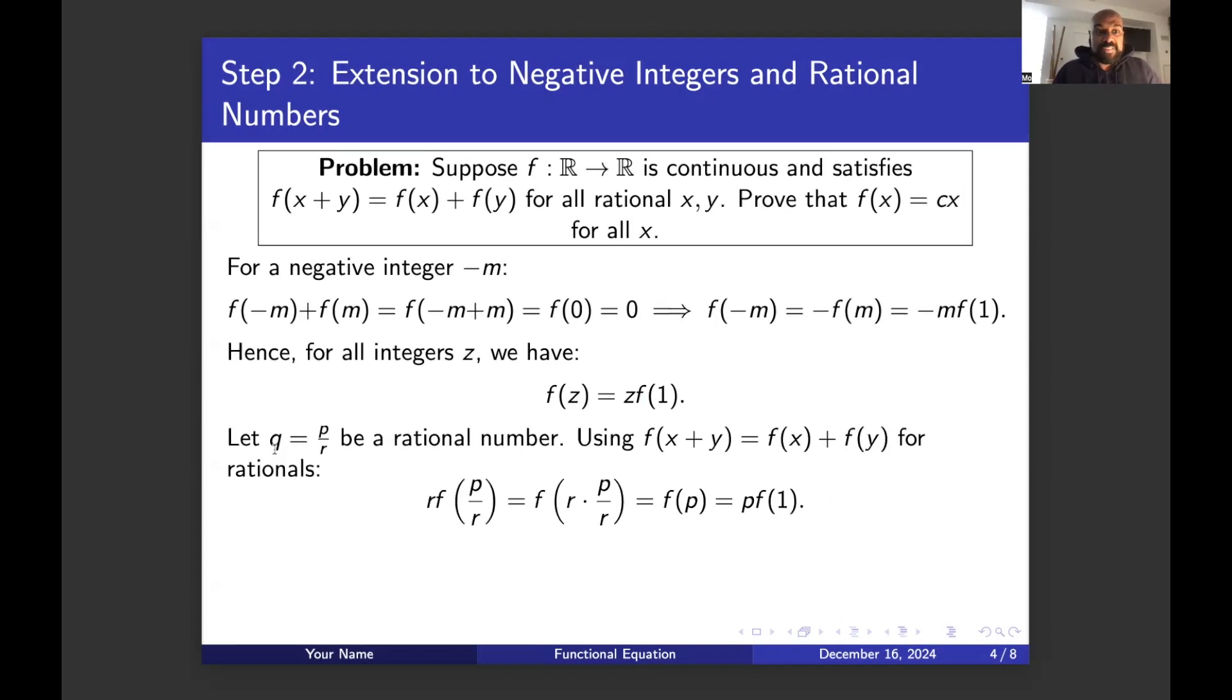So let's say we take a rational number q and write it as p over r. Where now p and r are themselves integers. Then again, using our property that f of x plus y is f of x plus f of y, if we look at r copies of f of p over r, p over r is the thing we're trying to actually compute the value of when we plug it into f. We'll assume r here is a positive integer.